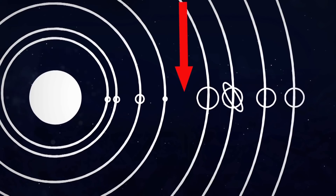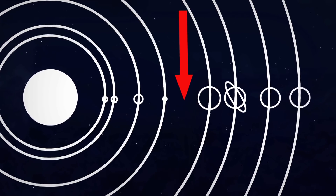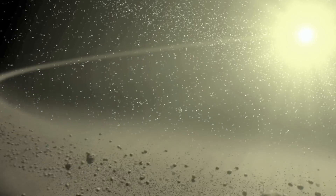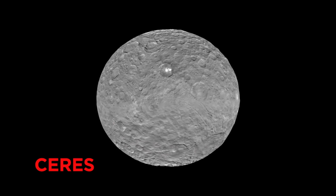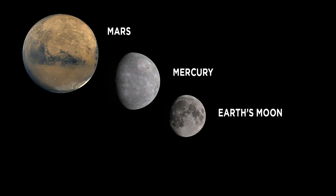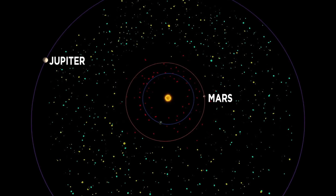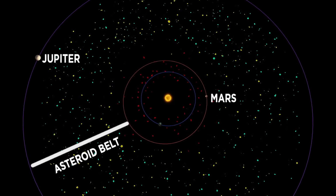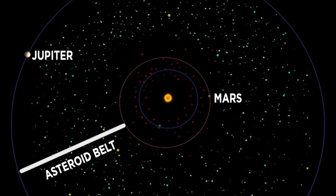The asteroid belt between Jupiter and Mars is the source of many of our meteorites. It has a relatively small mass — only about 4% of the mass of the Moon. Most of that mass is in the largest asteroids, and most of the asteroids are relatively small. There are a couple of theories of why no planets formed in the asteroid belt early on in the solar system's history.